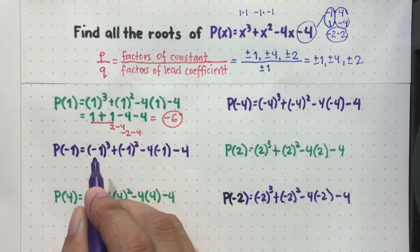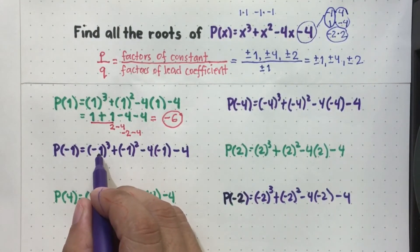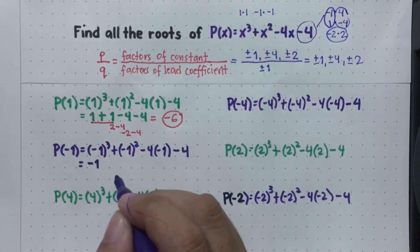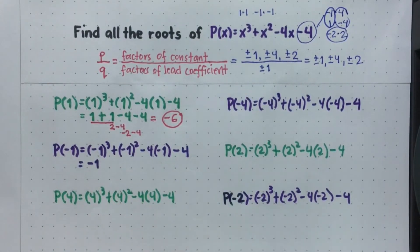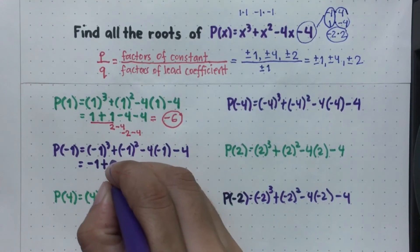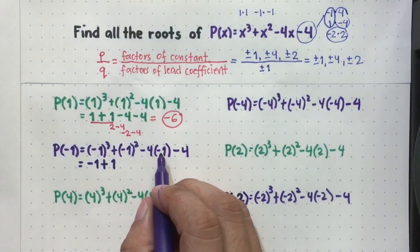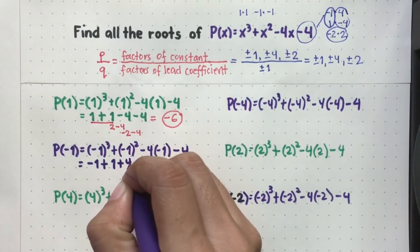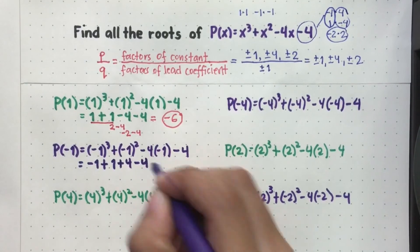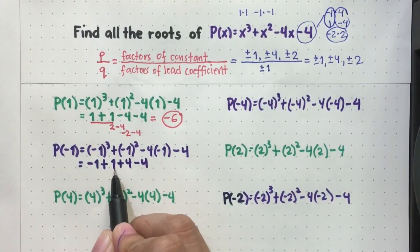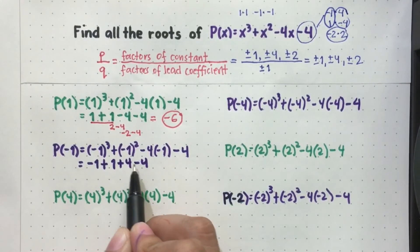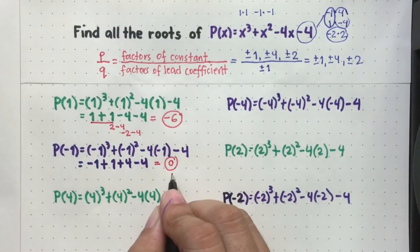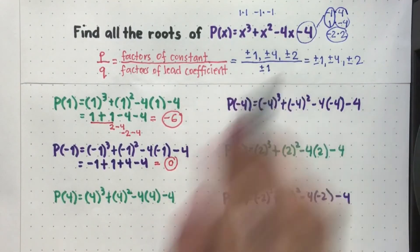Now P(-1): negative 1 cubed is negative 1 times negative 1 times negative 1. Negative 1 times negative 1 is positive 1, times another negative 1, magiging negative — so negative 1. Then negative 1 squared is positive 1. Then negative 4 times negative 1: kapag nag-multiply ng dalawang negative numbers, nagiging positive ang answer, so positive 4. Copy negative 4. Solving: negative 1 plus 1 is 0, then positive 4 minus 4 is 0. The answer is 0. Since 0 yung answer, ibig sabihin itong negative 1 ay isa sa mga roots ng polynomial na given.